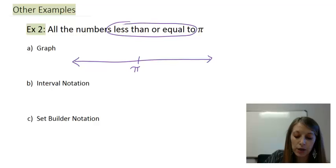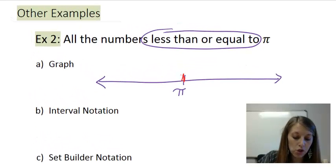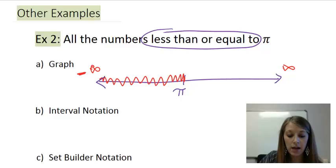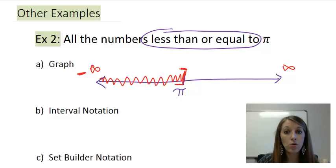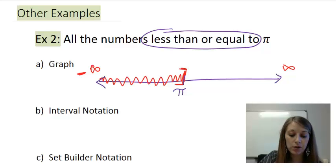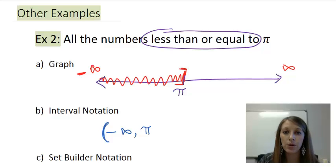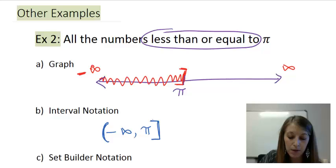I see 'less than or equal to.' Less than means smaller than, so I'm going to shade all the way to the left. The left is represented by negative infinity, while positive infinity is on the right. Because this is 'or equal to,' I have a bracket on pi since I'm including it. There should be no parentheses or bracket on the left arrow end. For interval notation, I go from negative infinity — always with a parentheses — up to pi, which gets a bracket because the example said 'or equal to.'